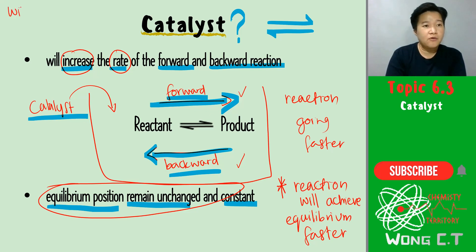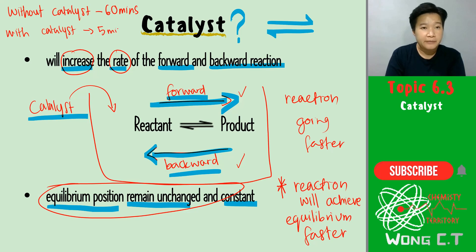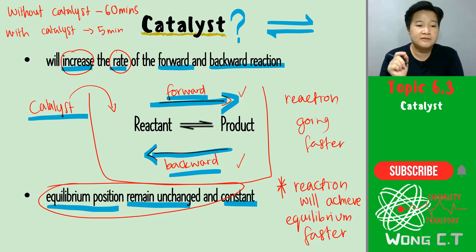If without catalyst, let's say you will probably need 60 minutes for the reaction to reach equilibrium. But if with catalyst, your reaction may take about 5 minutes to reach equilibrium. So that is the function of catalyst.